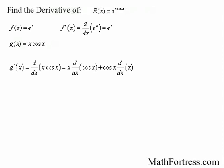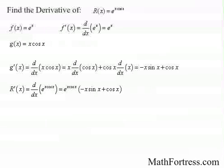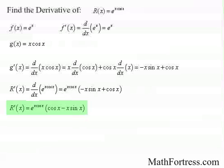Applying the product rule, we have that the derivative of g of x is equal to x times the derivative of cosine of x plus cosine of x times the derivative of x, which is equal to negative x times sine of x plus cosine of x. Carrying on the chain rule, we have that the derivative of r of x is equal to e to the power of x times cosine of x times the quantity negative x sine of x plus cosine of x. The final derivative is equal to e raised to the power of x times cosine of x times the quantity cosine of x minus x times sine of x.